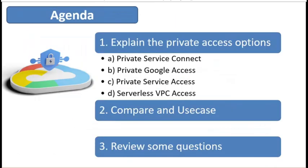So this is the agenda. First, I will explain the four private access options in detail: Private Service Connect, Private Google Access, Private Service Access, and Serverless VPC Access. As you can see, even the names are sometimes similar and confusing. Moving on, I will do a comparison between them and provide the suggested use case. And finally, I will review some questions on exam topics related to this private access option.